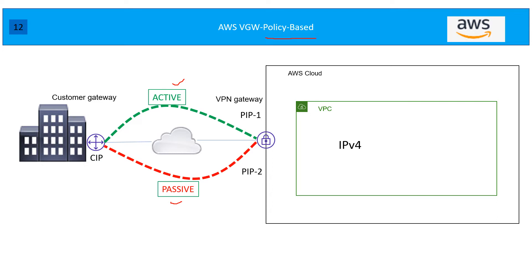For policy-based VPN there are still two tunnels, but one is active and one is passive. With policy-based, you cannot differentiate traffic across tunnels because the encryption domain is based on fixed source and destination ranges. Since your customer range and AWS range are both fixed, you can only use one tunnel at a time. Once that tunnel fails, your traffic will be redirected to the other, maintaining high availability.